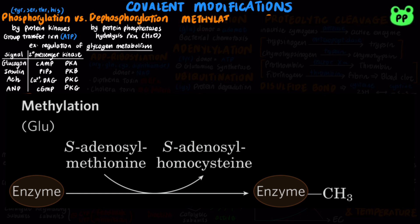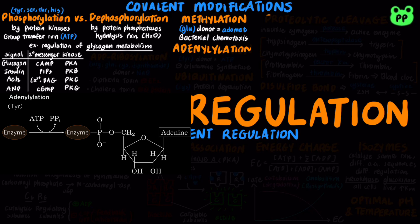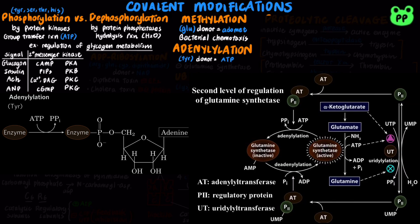Methylation of glutamine residues with S-adenosylmethionine, or SAM, as the methyl donor plays a role in bacterial chemotaxis, regulating the movement of a bacterium towards a food source or away from a repellent chemical. Adenylylation of tyrosine with ATP as the adenylyl donor inactivates glutamine synthetase, which plays an essential role in nitrogen metabolism.